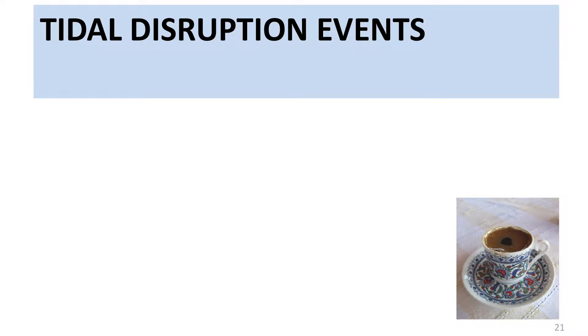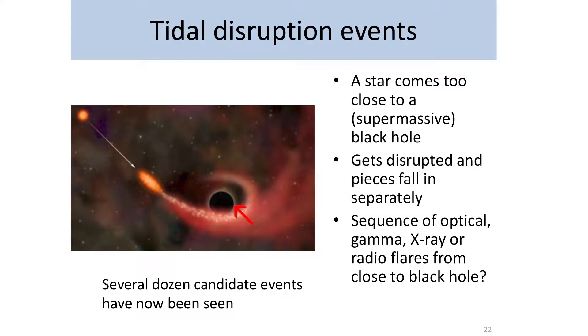Another phenomenon we're beginning to see is tidal disruption events. A star follows a trajectory that carries it dangerously close to a black hole at a galaxy's centre. As it approaches, the difference in gravitational pull stretches it into a cigar shape, which then breaks into fragments falling into the black hole one after another. Each infalling piece can produce a flare of radio, gamma, x-ray, or optical emission. At last count there were several dozen candidates for these tidal disruption events.